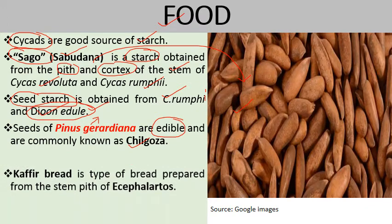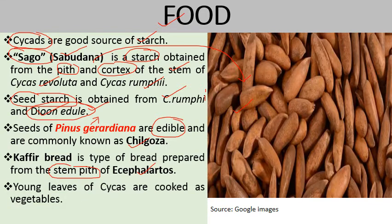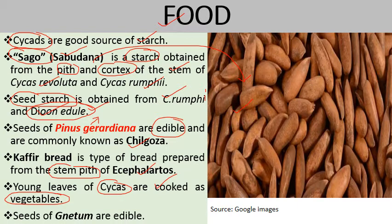Kaffir bread is a type of bread prepared from the stem pith of Encephalartos. In many areas of the world, Cycas leaves are cooked and used as vegetables. The seeds of Gnetum are also edible. These are some gymnosperms used as food.